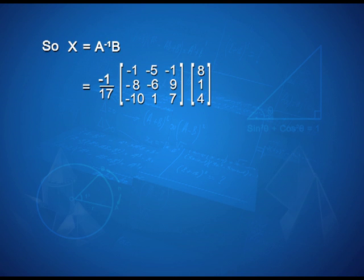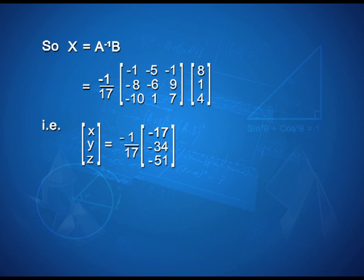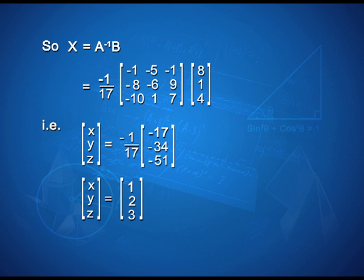So X = A⁻¹B = (-1/17) × [-1, -5, -1; -8, -6, 9; -10, 1, 7] × [8, 1, 4]. That gives [x, y, z] = (-1/17) × [-17, -34, -51], which gives x = 1, y = 2, and z = 3.